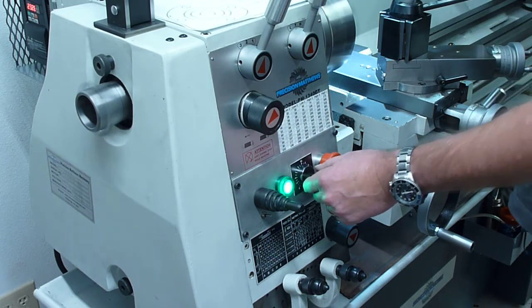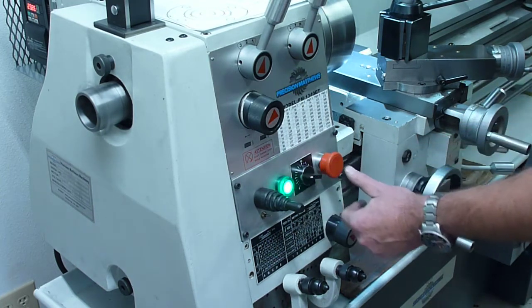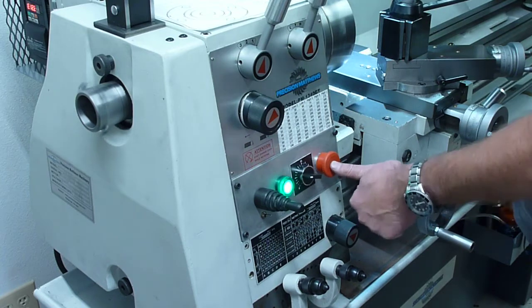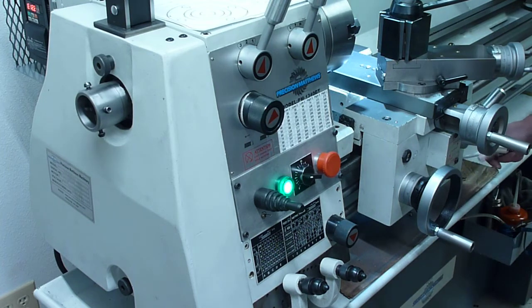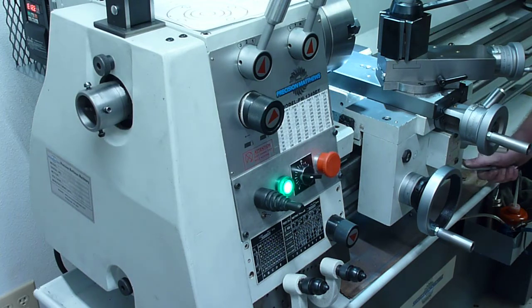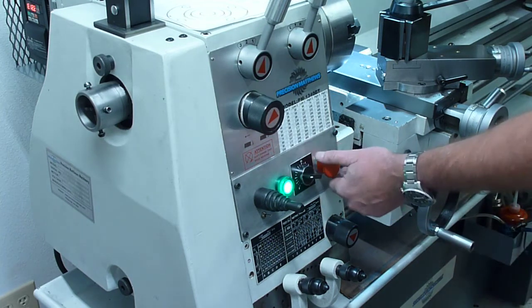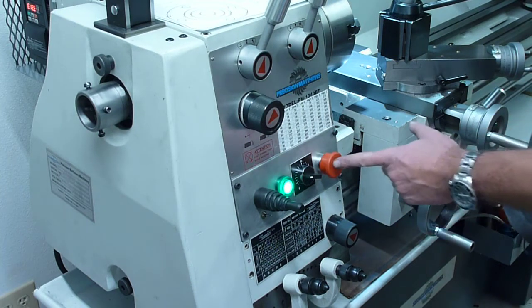If you have to stop the lathe in an emergency situation, obviously you hit the emergency stop button. The lathe should stop. However, you should be able to move the motor control switch to forward or reverse and the lathe should not start. Come over and reset the emergency stop button.